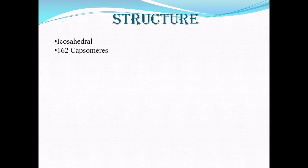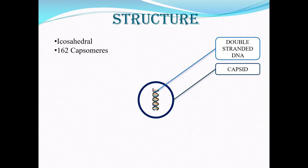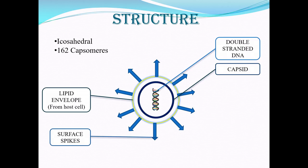Looking at the structure, you have an icosahedral virus shape with 162 capsomeres. The basic structure has a genetic material, which is double-stranded DNA. Surrounding that, you have a capsid, which protects the genetic material. Next you have a lipid envelope, which is acquired from the host cell when the virus comes out after replication. Surrounding that, you have surface spikes for attachment. And in between the capsid and the lipid envelope, you have something called tegument.